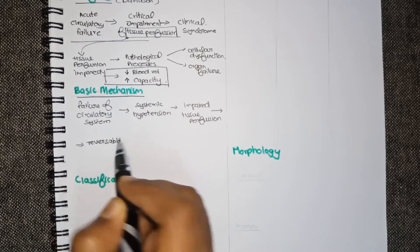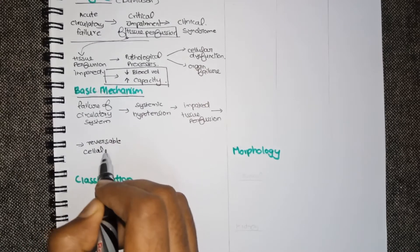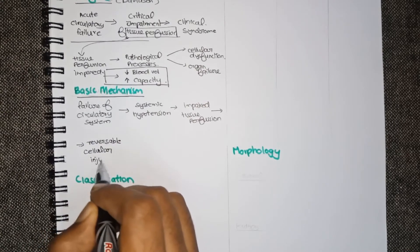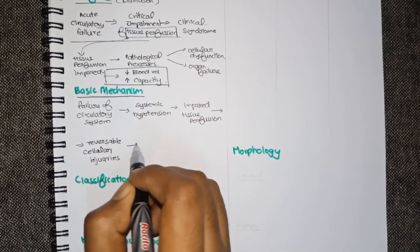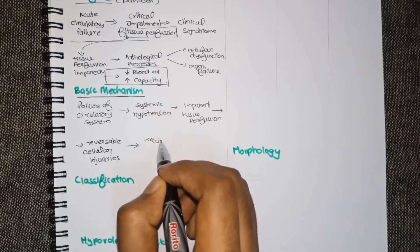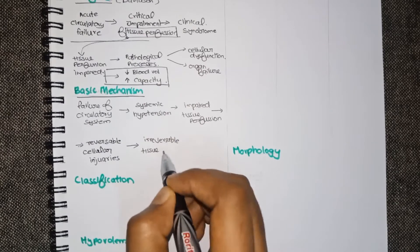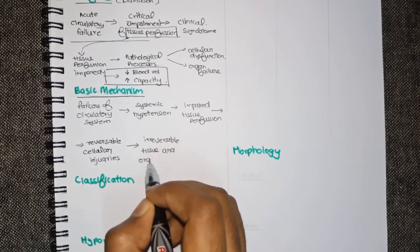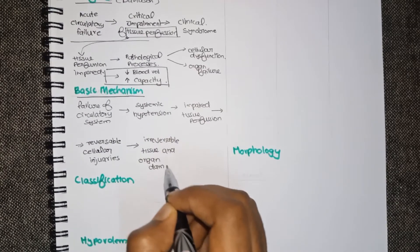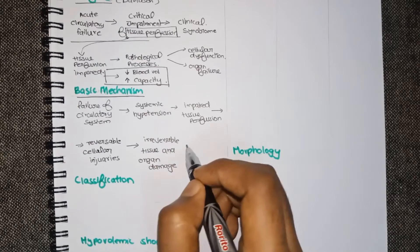Now we know that the tissue requires adequate blood supply for proper functioning. So what happens when there is no adequate supply? It results in reversible cellular injury. Now if the blood supply is not corrected timely, it will ultimately result in irreversible tissue and organ damage and that results in death.